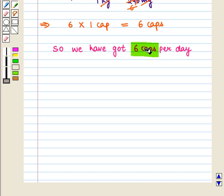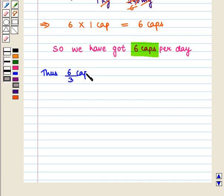Thus we have 6 divided by 3 capsules, which is 2 capsules for each dosage in a day.